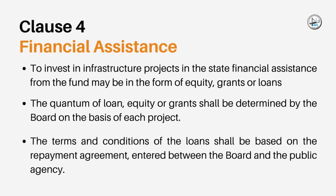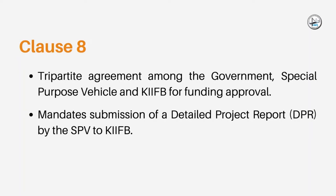As per clause 4 of the KIF Scheme, to invest in infrastructure projects in the state, financial assistance from the fund may be in the form of equity, grants or loans. The amount of loan, equity or grants to be borrowed shall be determined by the board on the basis of each project. The terms and conditions of the loans shall be based on the repayment agreement entered between the board and the public agency. Clause 8 discusses the tripartite agreement among the government, special purpose vehicle and KIF-B for funding approval. It also mandates submission of a detailed project report, DPR, by the SPV to KIF-B.